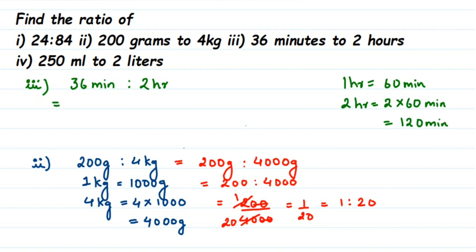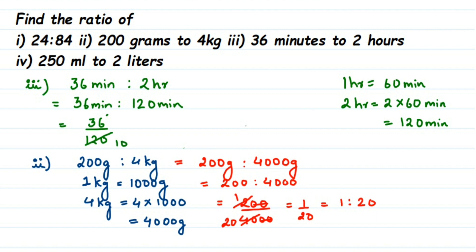So the ratio becomes 36 minutes is to 120 minutes. Both are in the same unit, giving us 36 upon 120. I'll cancel directly in the 12 table: 12×3 = 36 and 12×10 = 120, giving us 3 by 10. We cannot cancel this further, so the ratio is 3 is to 10.